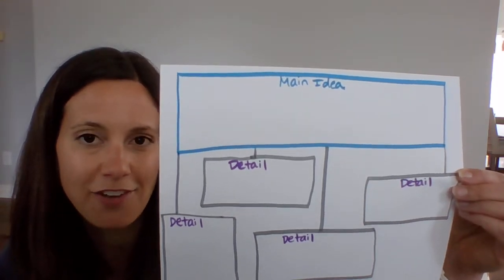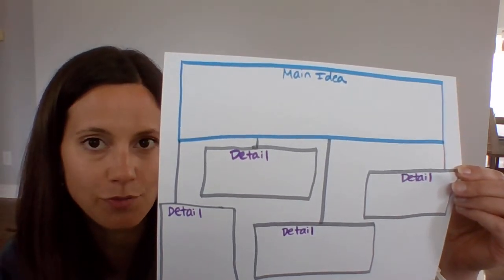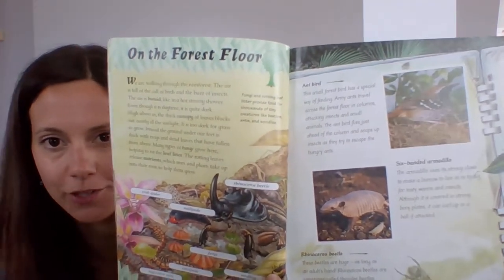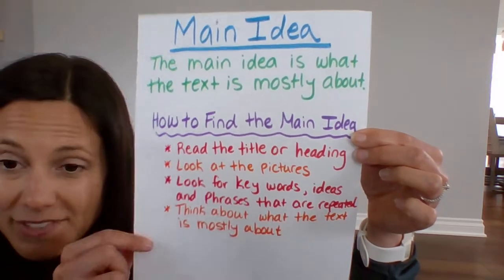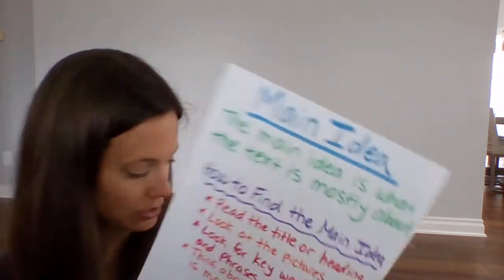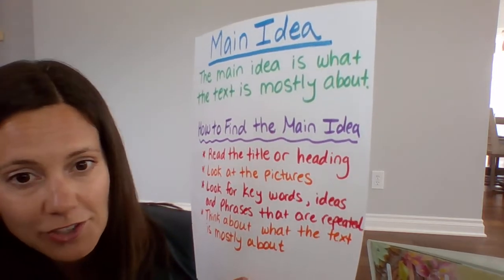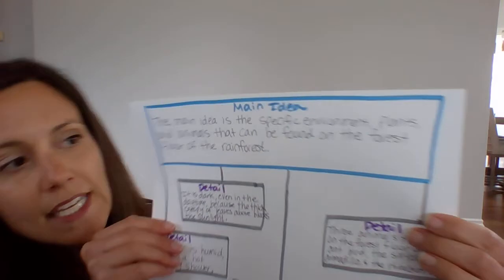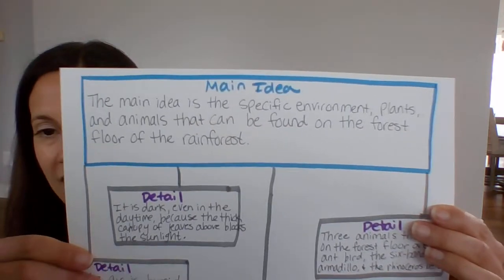When I read the next section of the book to you, I want you to be thinking about the main idea and the details. Let me show you an example for the section we just read about the forest floor. I had to think about what's the main idea of this chapter on the forest floor — remember that the main idea is what the text is mostly about. I read the title, which was "on the forest floor," looked at the pictures, read the text, looked for key words and phrases, and thought about what the text was mostly about. What I wrote for main idea is: the specific environment, plants, and animals that can be found on the forest floor of the rainforest.